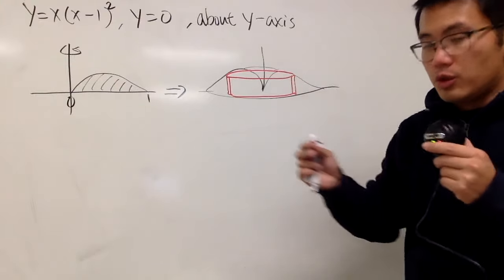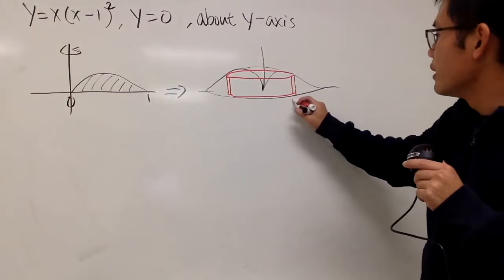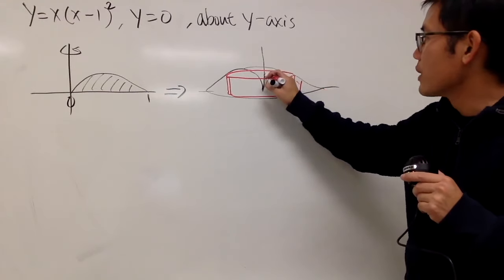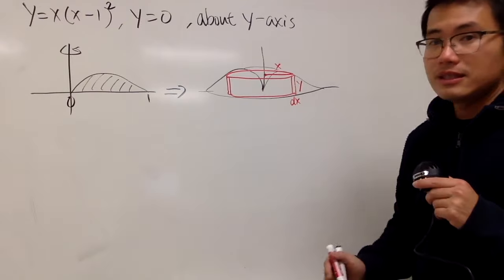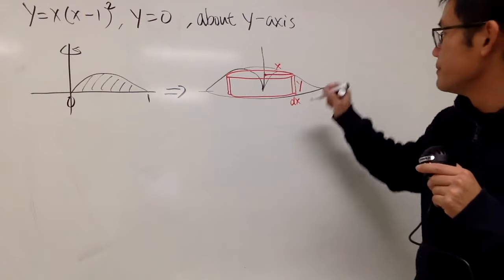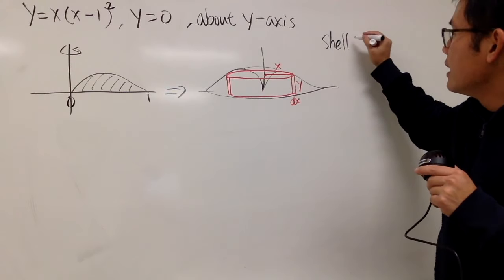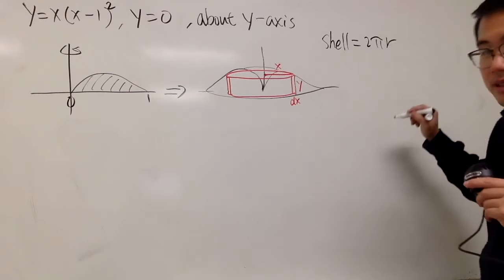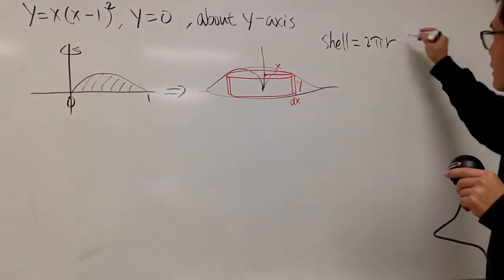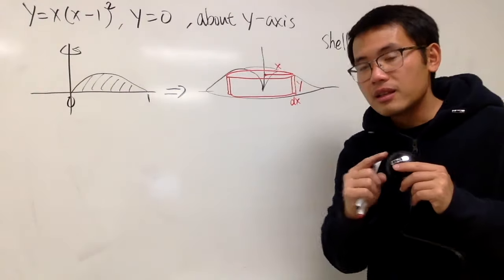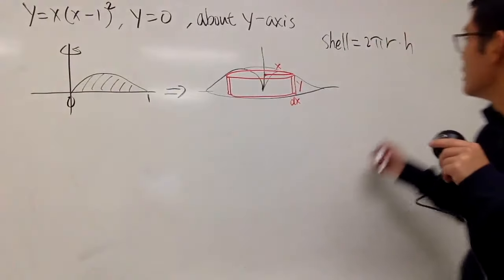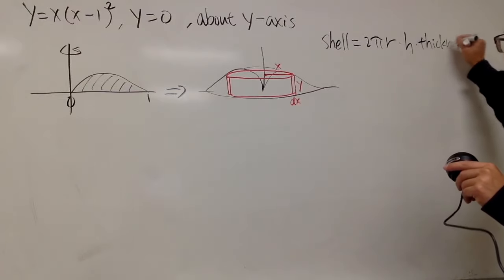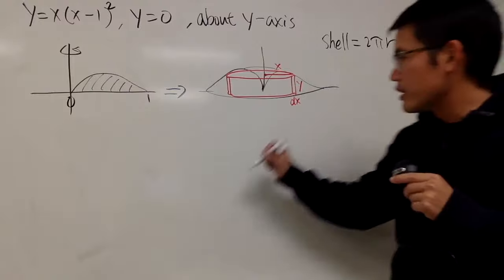Imagine you have a row of papers — that's the shell. The shell method idea is that we take the circumference, which is 2π times the radius, times the height — that gives us the rectangular strip around it — and then multiply by the thickness.